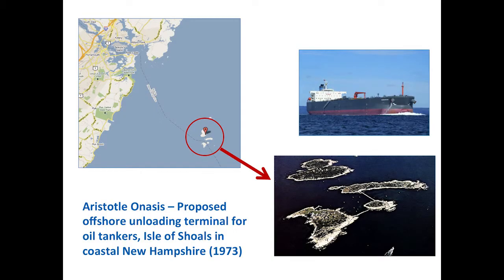While in college, Aristotle Onassis tried to put an offshore oil unloading terminal off the coast of New Hampshire near the Isles of Shoals, a small island six miles off the coast. Bob had spent much of his early years camping there and thought it a horrific idea. His friends who stayed in New Hampshire organized action against it and were successful — those islands are now protected, and Cornell runs a marine lab on one of them.